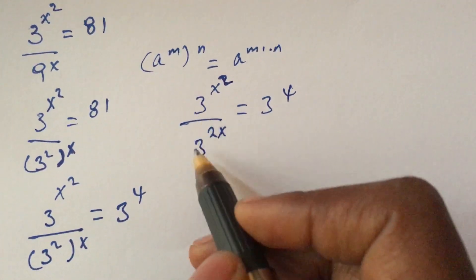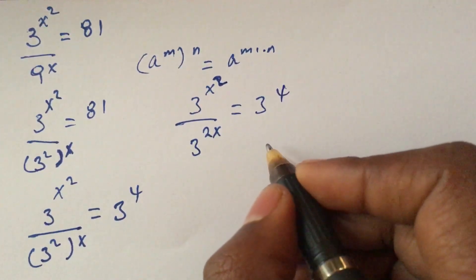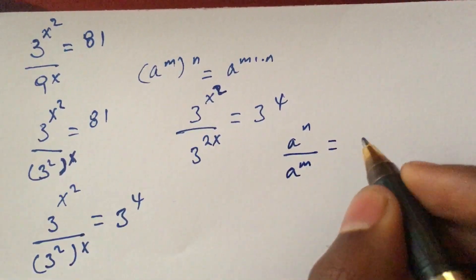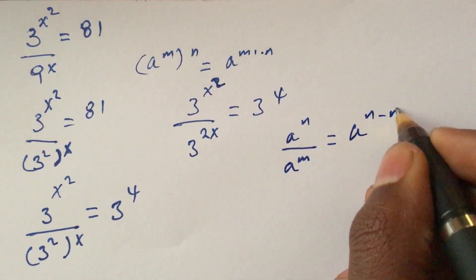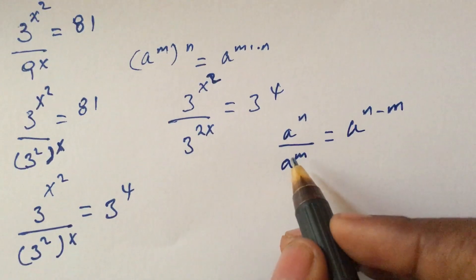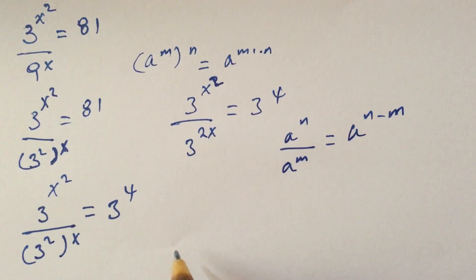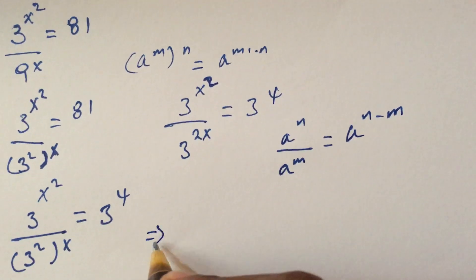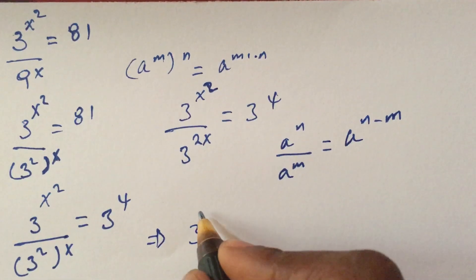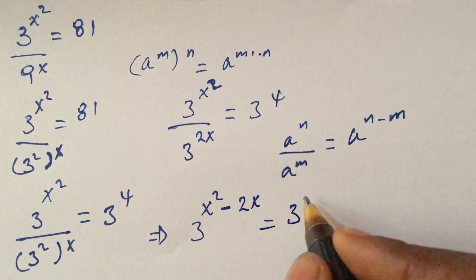Now we have the same base but different powers. We apply the division of exponents formula: A to the power of n over A to the power of m equals A to the power of n minus m. So our equation becomes 3 to the power of x squared minus 2x equals 3 to the power of 4.